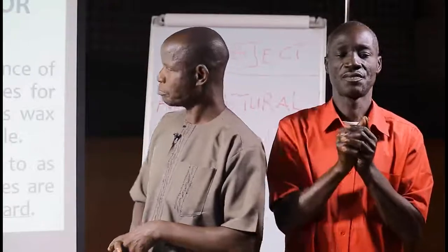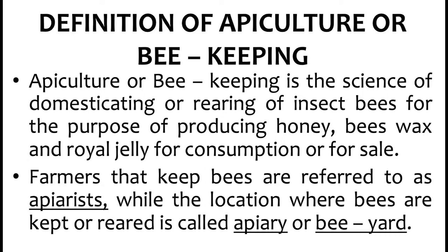The definition. Apiculture or beekeeping is the science of domesticating or rearing of insect bees for the purpose of producing honey, beeswax, and royal jelly for consumption or for sale. Farmers that keep bees are referred to as apiarians. The location where bees are kept or reared is called an apiary or bee yard.